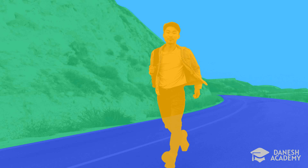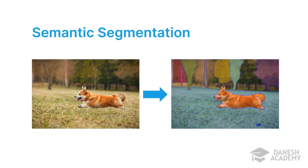Before talking about the weakly supervised part, let's talk about what segmentation is and what its applications are in computer vision tasks. Semantic segmentation is the method that associates a label or a category with every pixel in an image. As you can see in this sample, the model tries to specify different objects in an image and put semantic labels on them. As human beings this is a really easy task for us, but obviously it's not going to be that easy for machines.